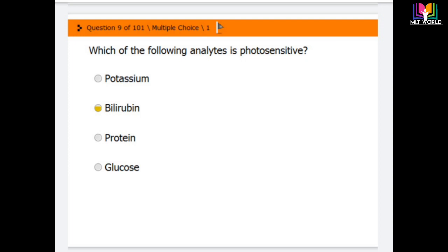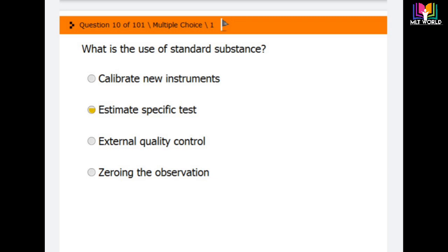Question number ten: What is the use of standard substance? Options are calibrate new instrument, estimate the specific test, external quality control, and zeroing the observation. The correct answer is second option: estimate the specific test. To estimate specific test, standard is used. So in this small video, I completed 10 MCQs.